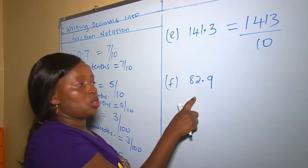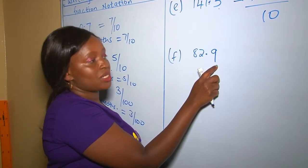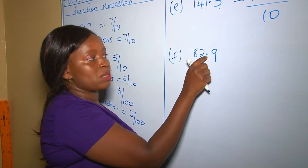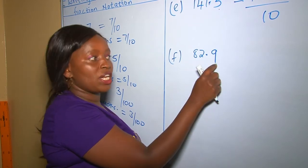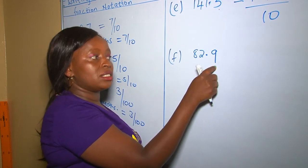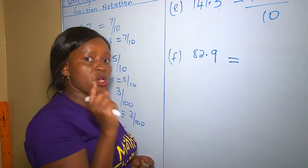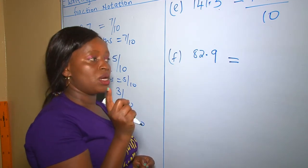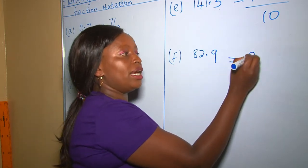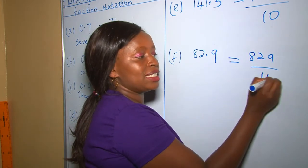In this question, we are given 82.9. How many digits are there after the decimal point? Only one digit. Because there is only one digit, it means that our denominator should have only one zero, and that is ten. So our answer is going to be eight hundred and twenty-nine over ten.